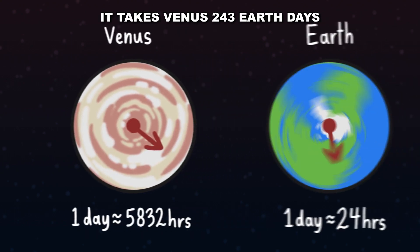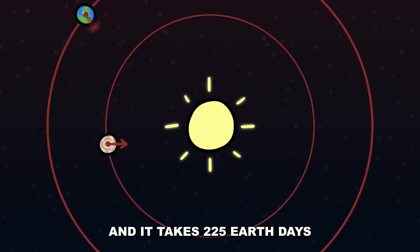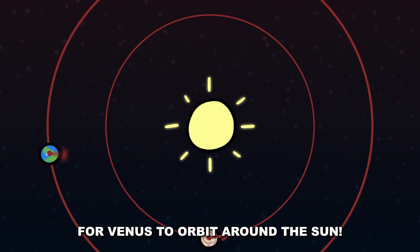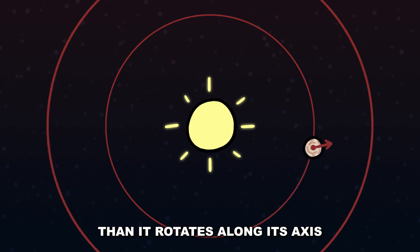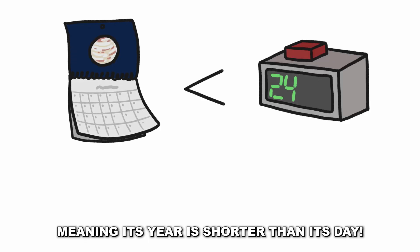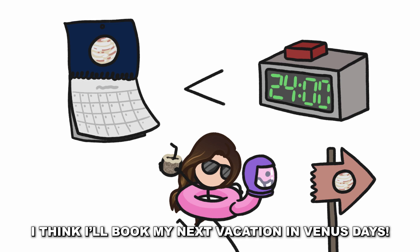It takes Venus 243 Earth days to rotate for one Venus day, and it takes 225 Earth days for Venus to orbit around the Sun. So it rotates around the Sun faster than it rotates along its axis, meaning its year is shorter than its day. I think I'll book my next vacation in Venus days.